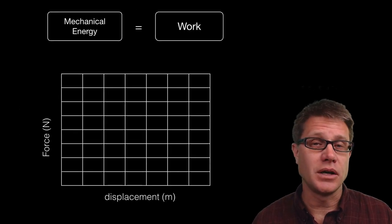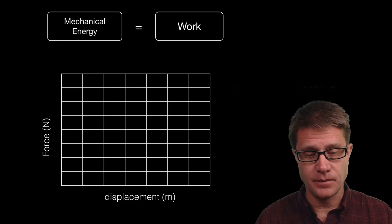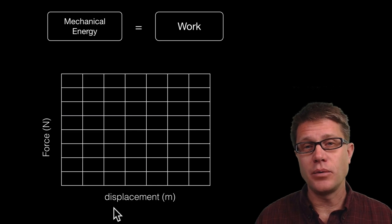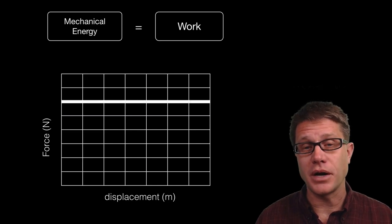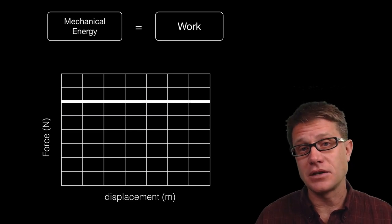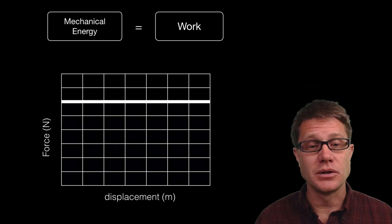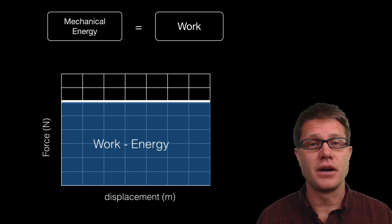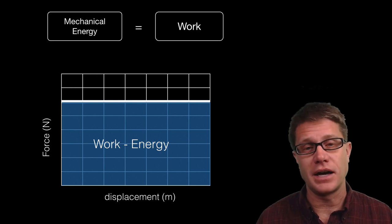A nice tool that we can use in physics to look at how much work we're doing is to look at a force versus displacement graph. If we apply a constant force, a parallel force, and we get a certain displacement, we just look at the area under that curve and that tells us how much work we've done and therefore how much mechanical energy we've added to that system.